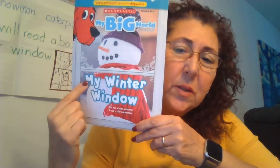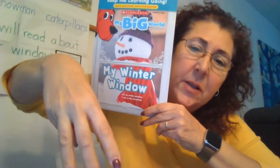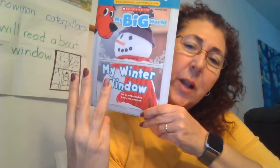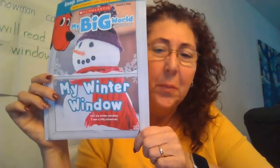Do you guys know what this letter is? It's kind of like a W, isn't it? It's an M. M has three legs that go down, W has three legs that go up. So it says 'my winter window.' Out my window I see a silly snowman. I wonder what you see out your window today.